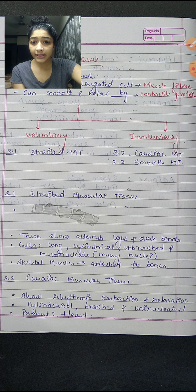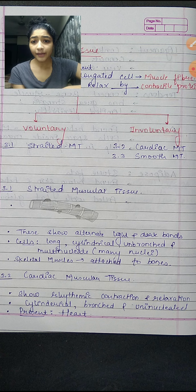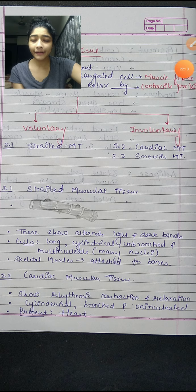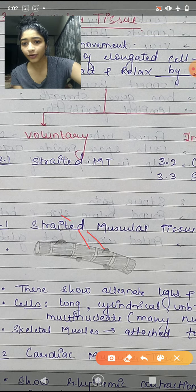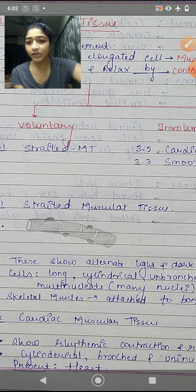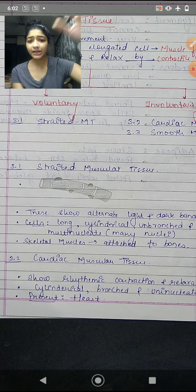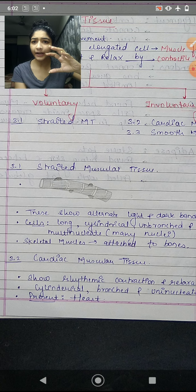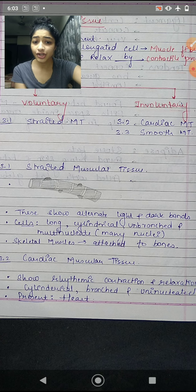Striated muscular tissue shows alternate light and dark bands. The cells are long, cylindrical, unbranched, and multinucleated. Cardiac muscle — our heart is made from cardiac muscles. It shows rhythmic contraction and relaxation, which is our heartbeat. The cells of cardiac muscle are cylindrical, branched, and uninucleated.